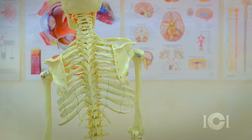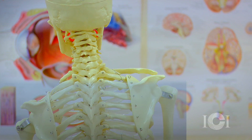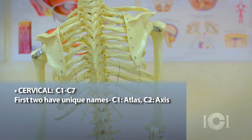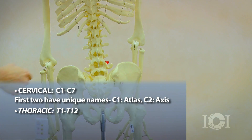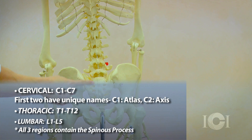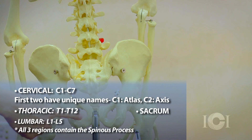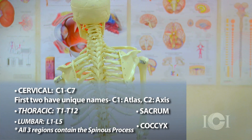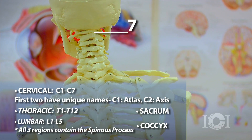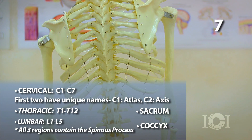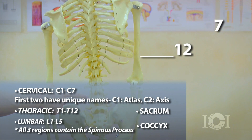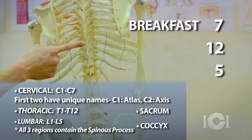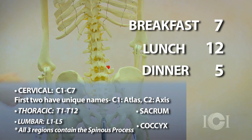Now let's review one more time. What is this region called? Cervical. What's this region called? Thoracic. What's this region called? Lumbar. What is this bone called? Sacrum. And this last bone right here? The coccyx. How many bones are there in the cervical region? Seven. How many in the thoracic region? Twelve. How many in the lumbar region? Five. Breakfast is at 7, lunch is at 12, dinner is at 5 — a good way to remember that.